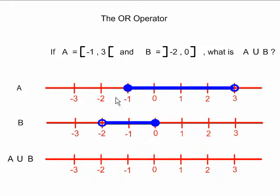Negative one and a half is not in A, but it is in B, so it will be in the answer. Two and a half is not in B, but it is in A, so it will be in the answer.